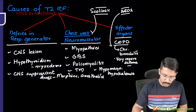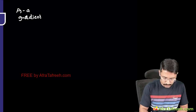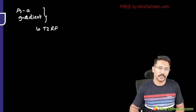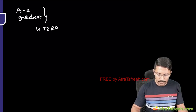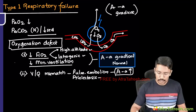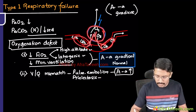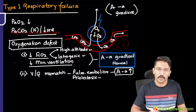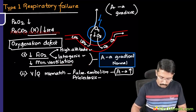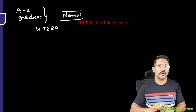Regarding AA gradient in type 2 respiratory failure: it largely remains normal. These patients may have hypoxia, but it is because of overall hypoventilation — reduced respiratory effort means less air reaches the alveoli, reducing both oxygenation and CO2 clearance. The decrease in blood oxygen level is proportionate to the decrease in alveolar oxygenation, so the AA gradient in most cases of type 2 respiratory failure is going to be normal.